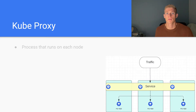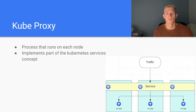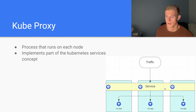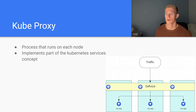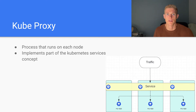KubeProxy is a process that runs on each node, similar to kubelet. It implements part of the Kubernetes services concept. In our diagram here we can see that we have three nodes, each of these nodes has a pod deployed, and there is a service that is used to access the pods. In order to facilitate this service routing traffic and load balancing traffic, we have kubeproxy deployed on each of the nodes. This is essentially what drives the ability to implement and specify services in Kubernetes.